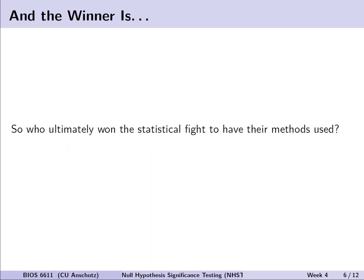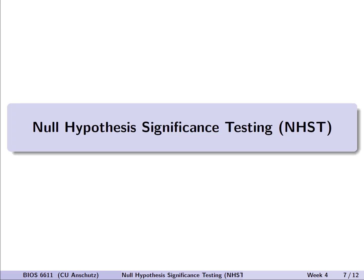So, with these two strategies to choose from, what have we wound up with today? Who ultimately won the statistical fight to have their methods used, and is the reigning champion of how we do statistics today? And that leads us to the null hypothesis significant testing framework.